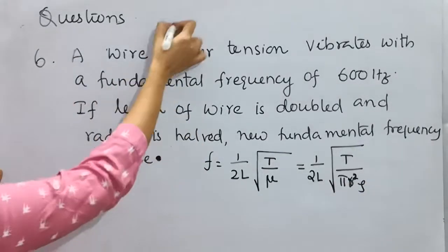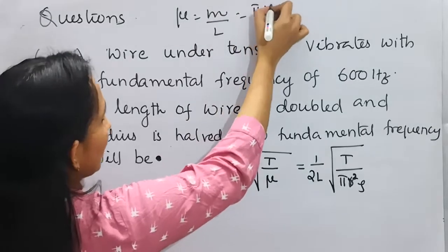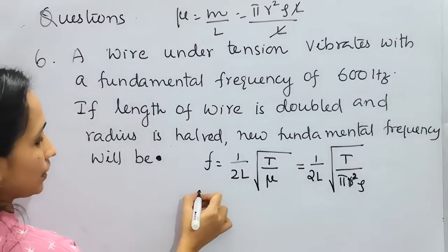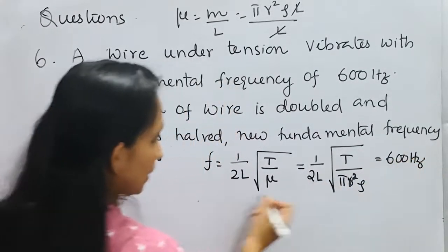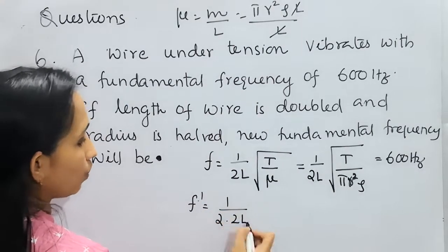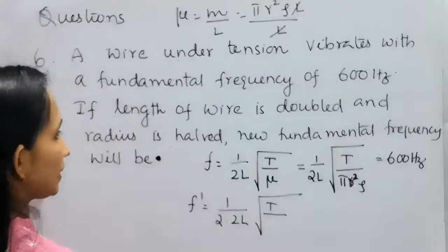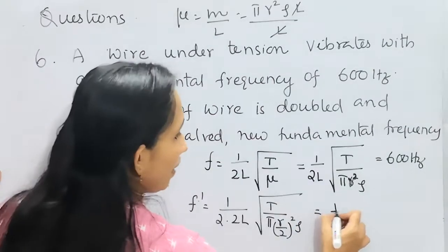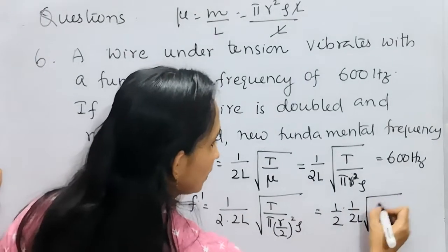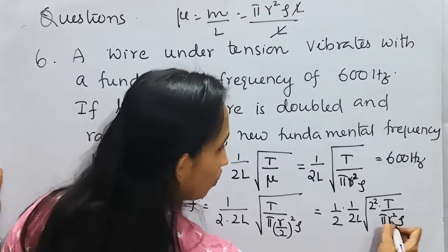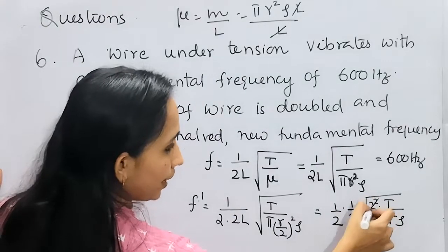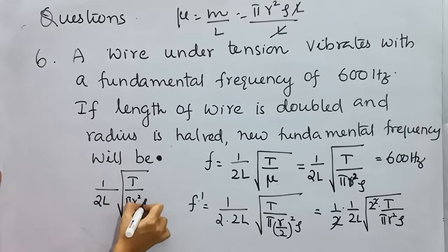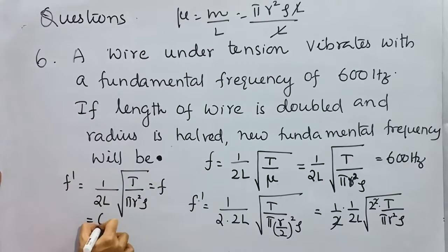We need to find f'. With length doubled to 2L and radius halved to r/2: f' = (1/(2·2L))·√(T/(π·(r/2)²·ρ)). Since (r/2)² = r²/4, the 4 comes to the numerator giving a factor of 2 in the square root: f' = (1/4L)·√(4T/πr²ρ) = (1/4L)·2·√(T/πr²ρ). The 2s cancel, so f' = (1/2L)√(T/πr²ρ) = f = 600 Hz.